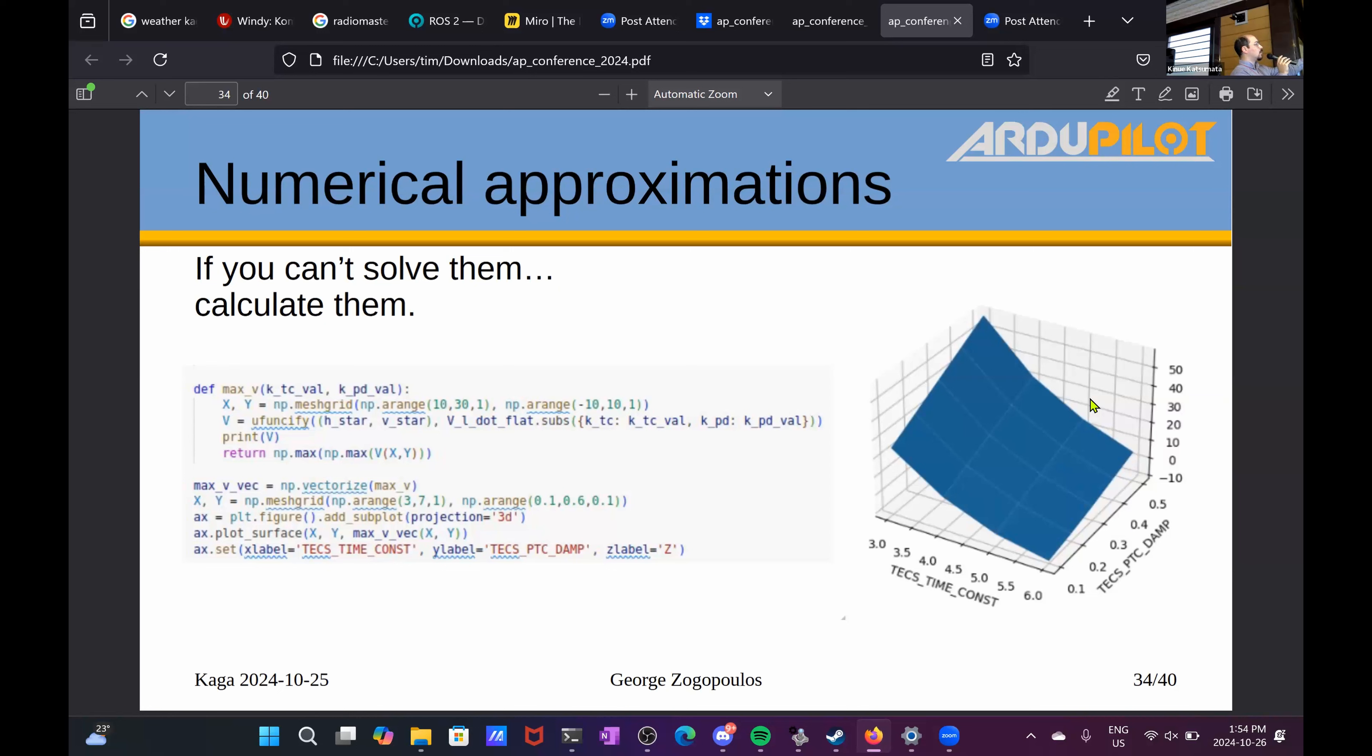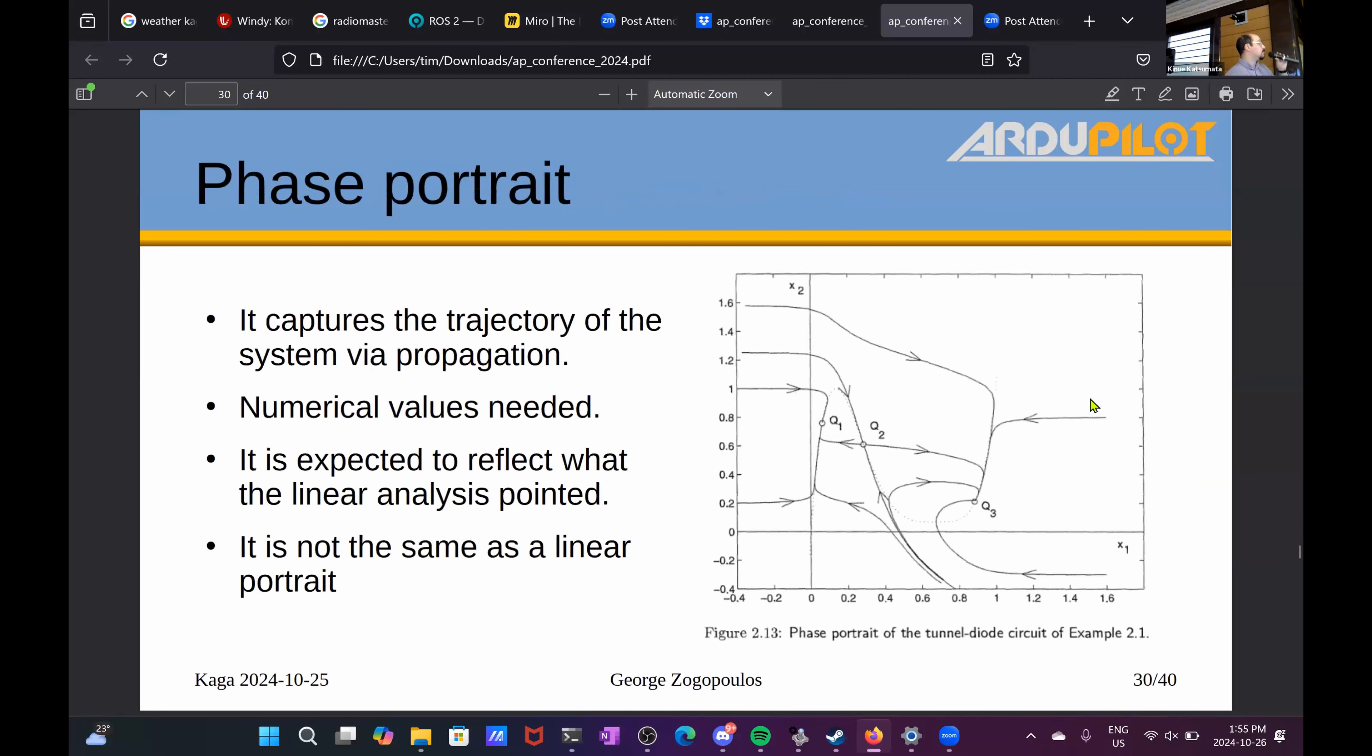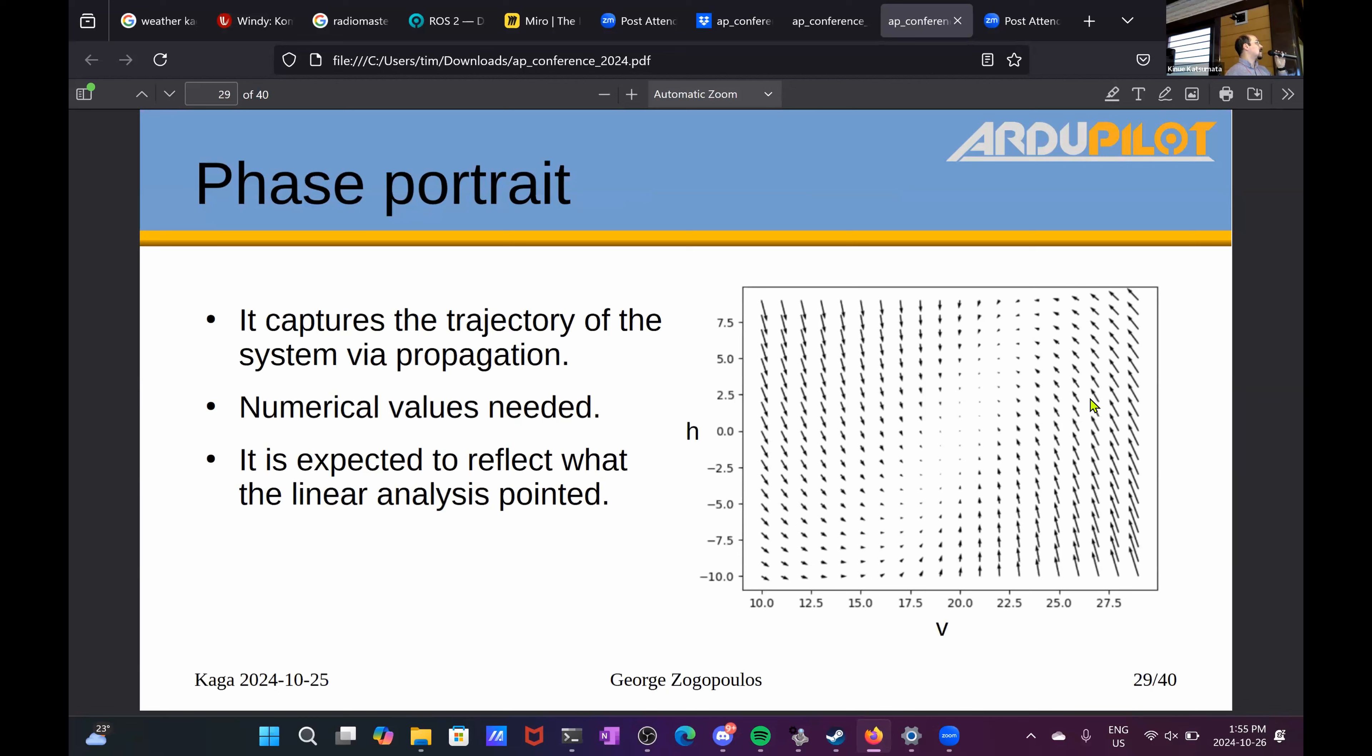And what I did was that I evaluated the Lyapunov function derivative all over the domain of a few meters per second up and down on the velocity axis and a few meters up and down on the altitude axis, and plotted the maximum of that Lyapunov derivative. And you can see how for some values of the time constant and some values of the damping constant, you get positive values. I'm plotting the max of the max, so along that whole phase portrait I take the maximum value basically.